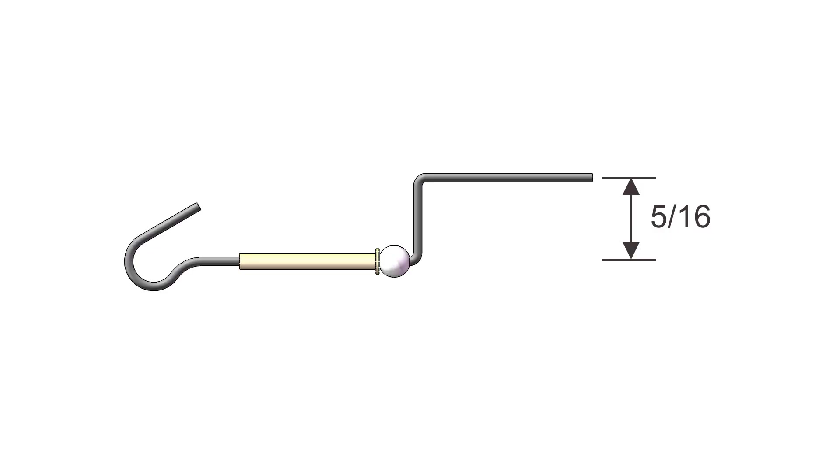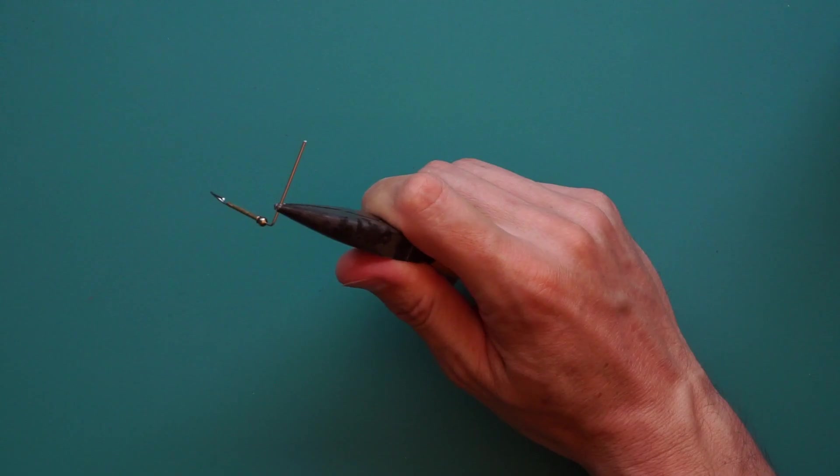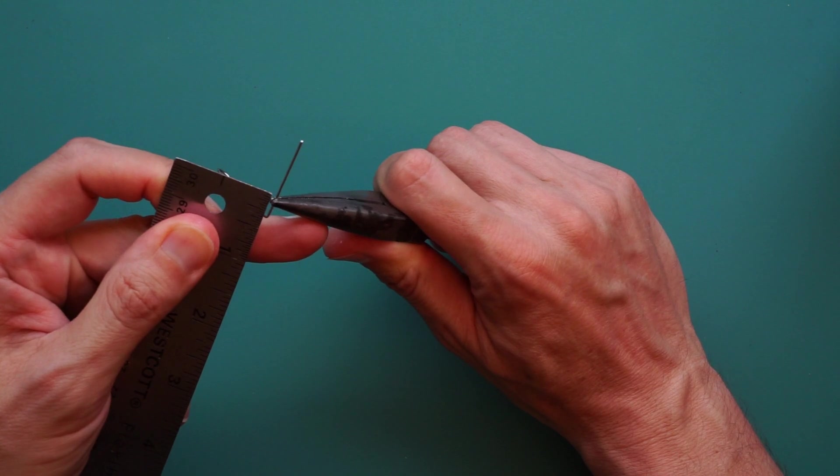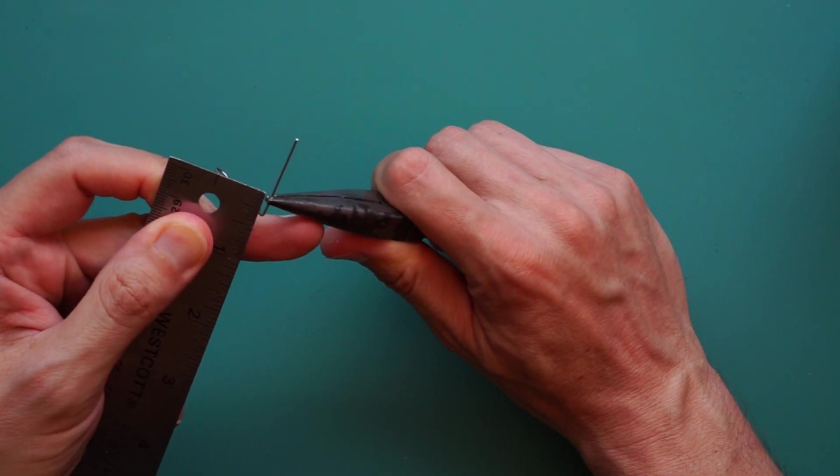The crank should measure about 5 sixteenths center to center. But you want to measure it a little bit less because the wire is not going to end up in the same place as where you put the pliers.